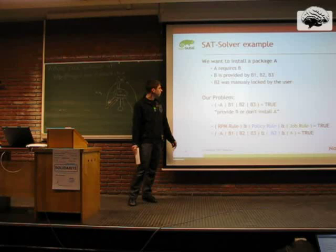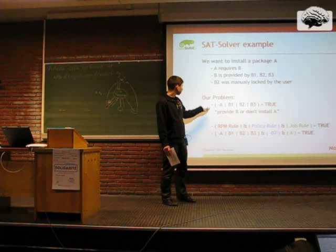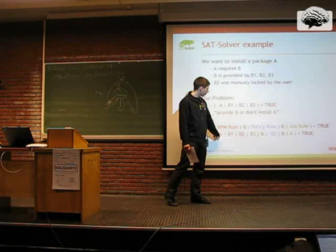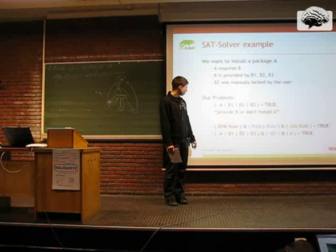Our RPM rule looks like this: not A, or B1, or B2, or B3. We have to provide B or we can't install A. Our rule set has the RPM rule, the policy rule (not install B2), and the job rule (install A). So the SAT solver returns the solution: install A, and install B1 or B3.